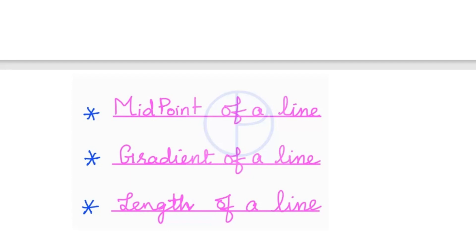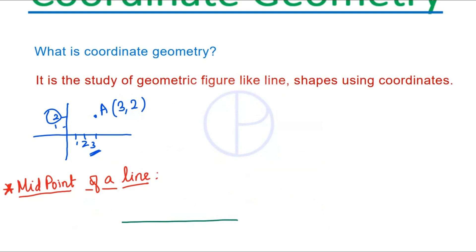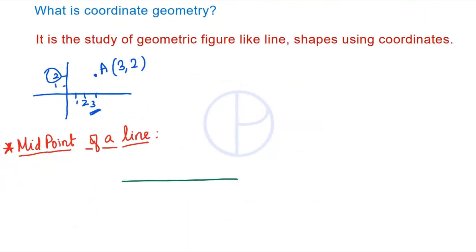First — midpoint of a line. How to find the midpoint of a line in a two-dimensional plane? Consider this line AB. The midpoint of a line will be the same distance from both endpoints. Suppose if I mark this as M, that is the midpoint, then the distance from A to M and M to B will be equal. It is like finding the average of two coordinates.